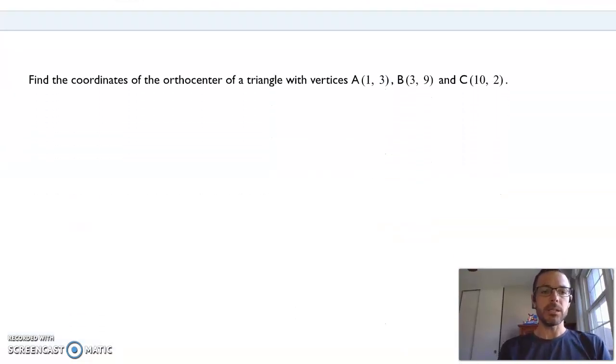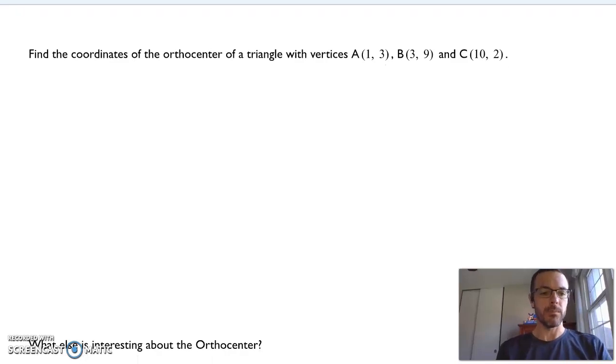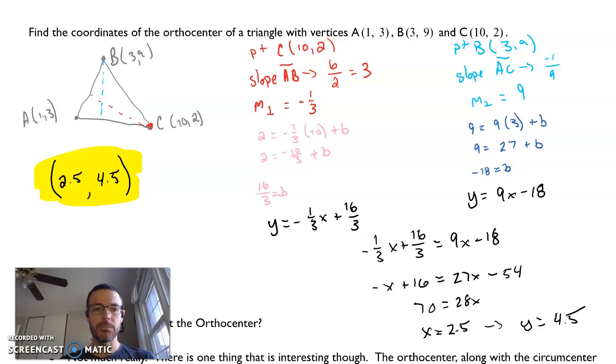All right, go ahead and take a minute and see if you can do the second one here on the next page. For example, I used point C, the altitude from C, and I found that using that point, the slope of AB, the perpendicular slope, I find a y-intercept at 16 thirds. I get this equation for the altitude from C. Using point B for my other, and the slope of AC being negative 1 ninths, the slope that's perpendicular would be a positive 9. And my equation would be y equals 9x minus 18 after finding the y-intercept. Solving that system, I get 2.5, 4.5.